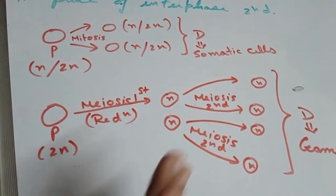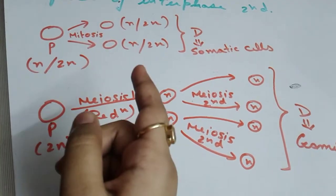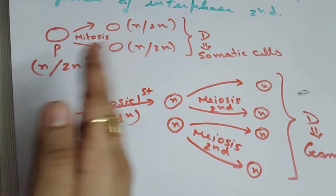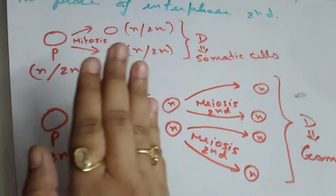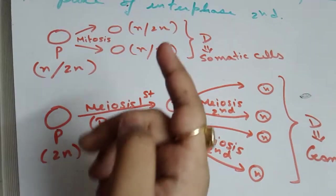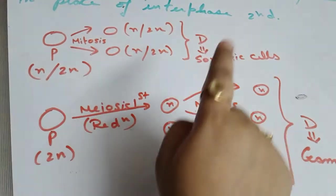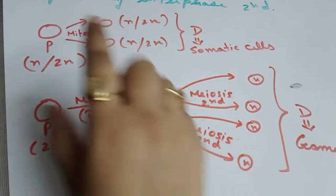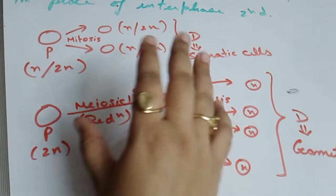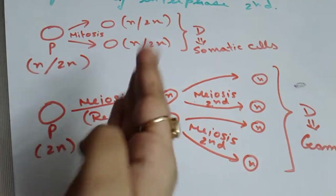There is no difference in the ploidy level and the amount of DNA is equal in both daughter cells, the same as in the parent cell. D stands for daughter cell. Mitosis essentially takes place in somatic cells, or somatic cells are generated through mitosis.